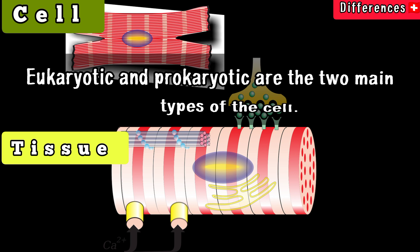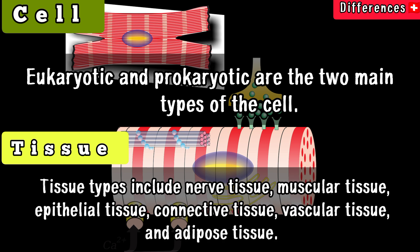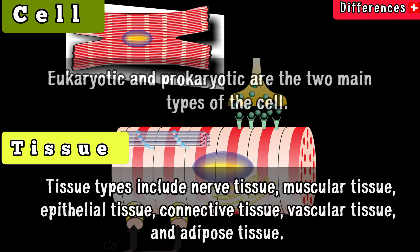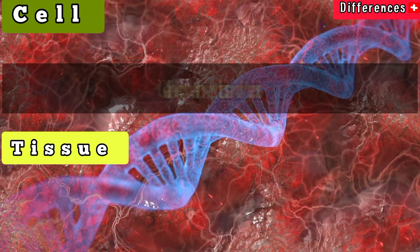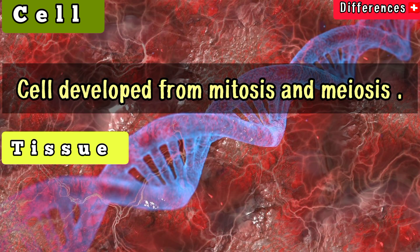Eukaryotic and prokaryotic are the two main types of cells. Tissue types include nerve tissue, muscular tissue, epithelial tissue, connective tissue, vascular tissue, and adipose tissue. Cells are developed from mitosis and meiosis.